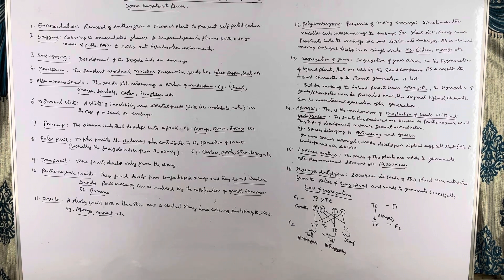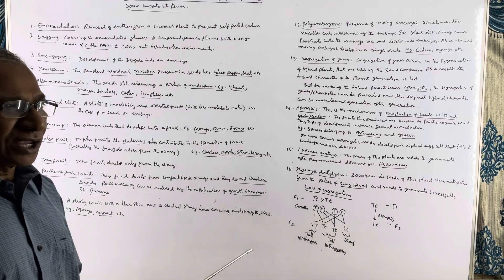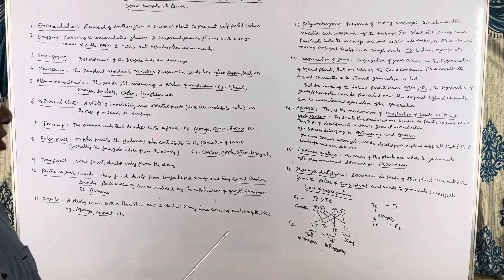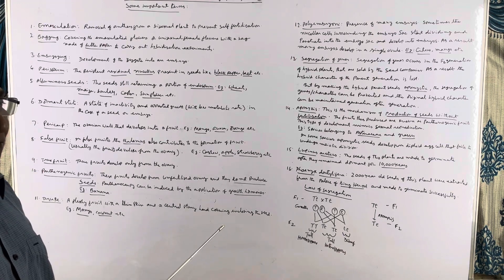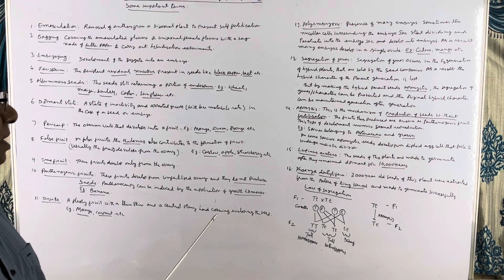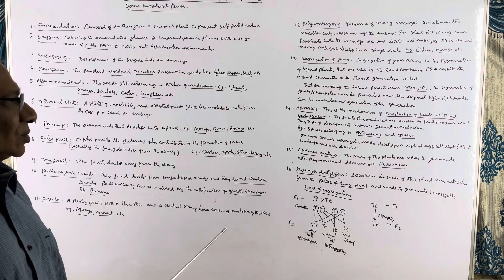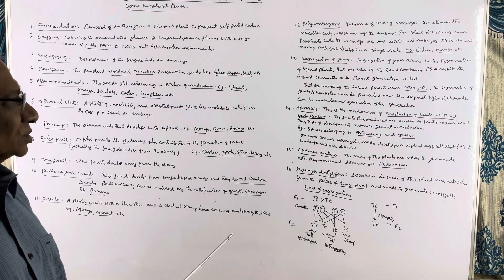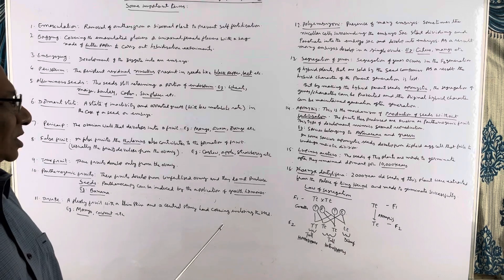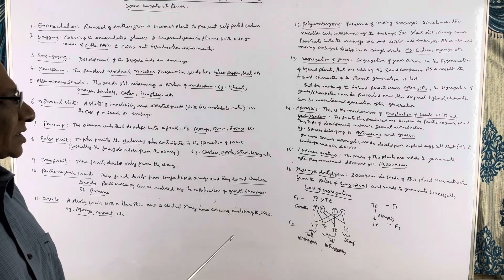Polyembryony: the presence of many embryos in the embryo sac is known as polyembryony. Usually only one embryo develops in the embryo sac, but sometimes surrounding nucellar cells penetrate into the embryo sac and also develop into embryos. As a result, many embryos develop in the embryo sac. Examples: citrus and mango.